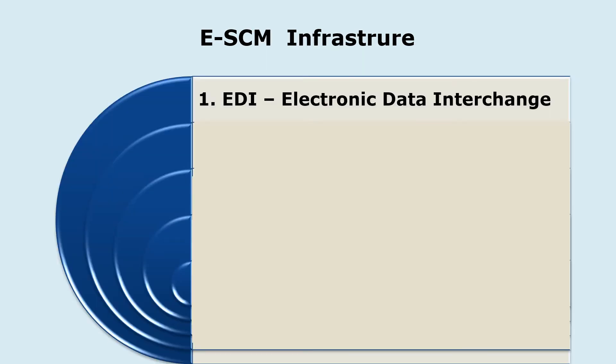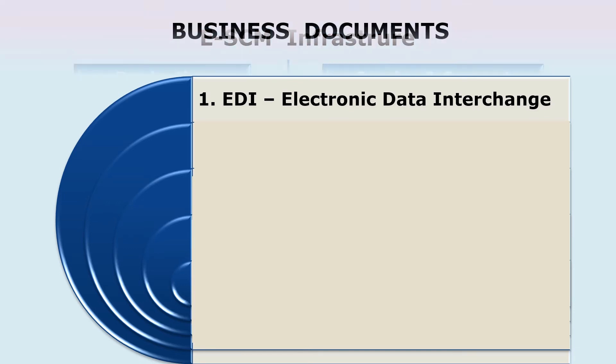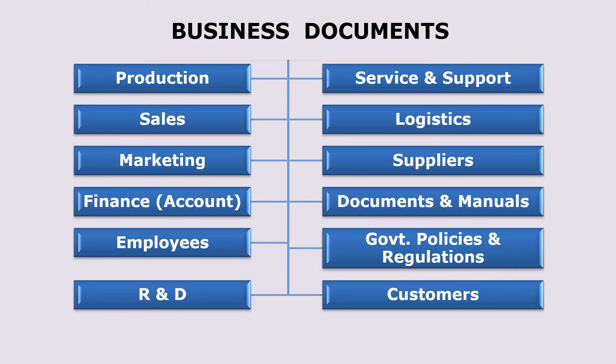Now let us understand e-supply chain management infrastructure. The first one is EDI — electronic data interchange. A business organization consists of millions of business documents.